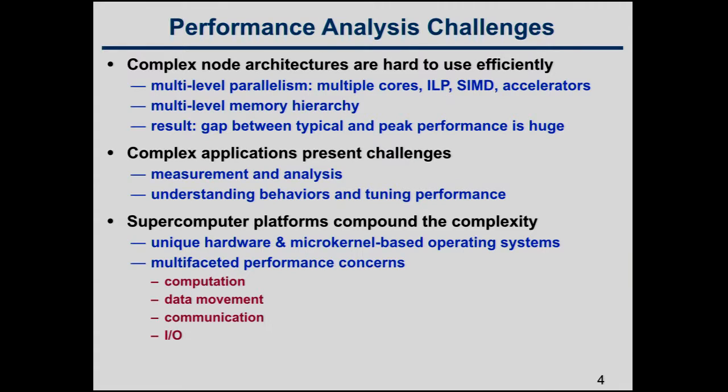The challenges are that node architectures are complex: there's multi-level parallelism, multiple cores, instruction-level parallelism, SIMD instructions for short vectors, and also on some machines, accelerators. All of the machines have a deep memory hierarchy, and memory runs a lot slower than the processor clock rate. Often what you'll find is that a program will only get maybe 15% of peak or so, and it requires significant improvements to get higher than that. If you're not paying attention to performance at all, you'd be lucky to get 15% of peak.